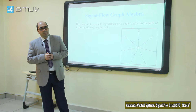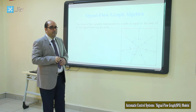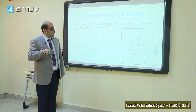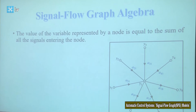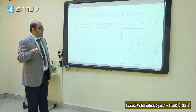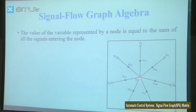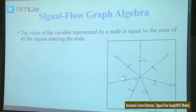In a signal flow graph, suppose we have a node with a variable assigned to it and we want to find the value of that variable. The value of each variable assigned to a node in a signal flow graph is equal to the sum of all the signals entering that node — only the signals entering that node.